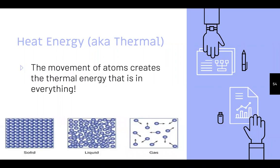Heat energy is also known as thermal energy — the movement of atoms creates thermal energy in everything. In a solid, heat energy is pretty compact with not much movement. In a liquid, there's a little more movement. In a gas, there's chaotic, erratic movement all over the place — those particles are constantly moving. We can see these different states of matter and how heat differs in each.